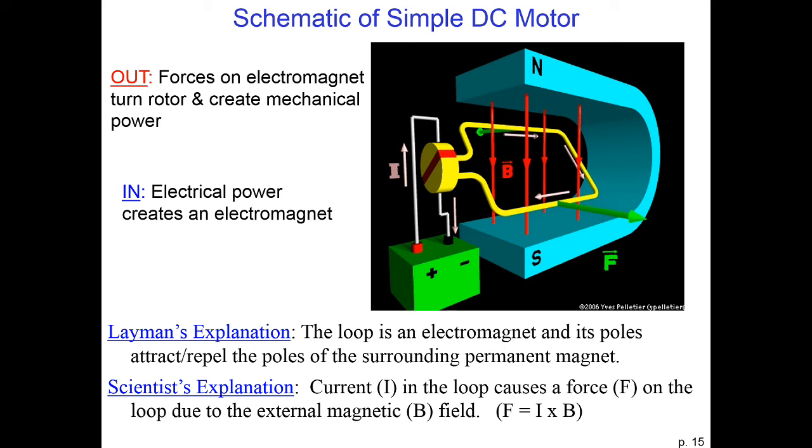Another way that you can think of this is that the loop is an electromagnet, and our north magnetic pole is pointing into the page, and the south magnetic pole is pointing out of the page. The electromagnet wants to turn, so the north pole faces the south pole of the permanent magnet.